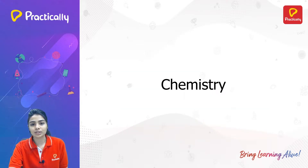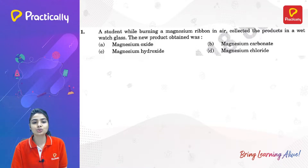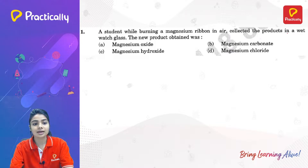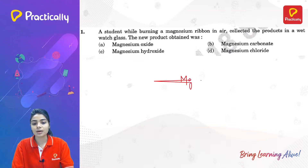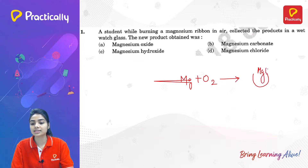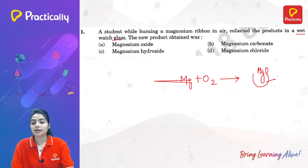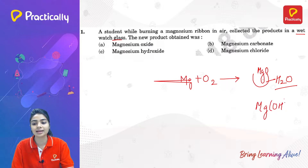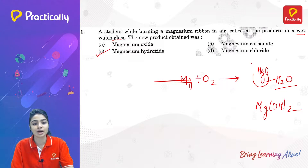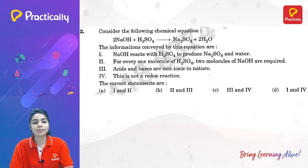Let's start with the Chemistry section. A student while burning a magnesium ribbon in air collected the product in a wet watch glass. Magnesium burns in air, and the product — magnesium oxide — is collected in a wet watch glass. Since the watch glass is wet, it contains water, so magnesium oxide reacts with water to form magnesium hydroxide, Mg(OH)₂.